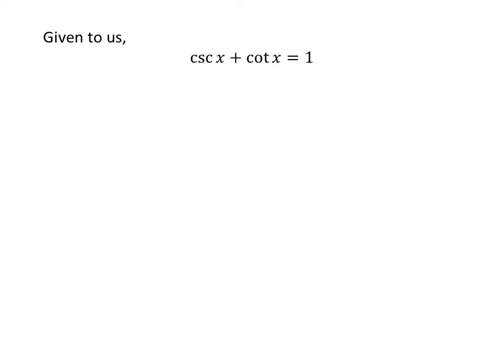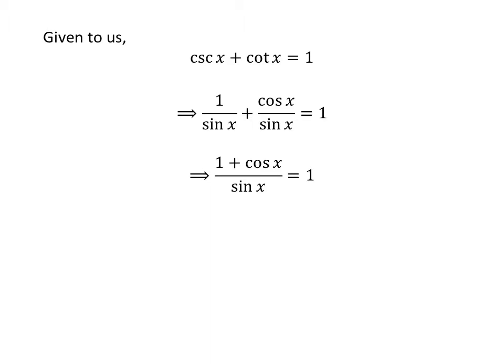We are given cosecant of x plus cotangent of x is equal to 1. We know cosecant of x is equal to 1 upon sin of x and cotangent of x is equal to cos of x upon sin of x. So we can rewrite the above equation as 1 upon sin of x plus cos of x upon sin of x is equal to 1. As sin of x is the common denominator of both fractions, addition of the fractions gives us 1 plus cos of x upon sin of x is equal to 1.